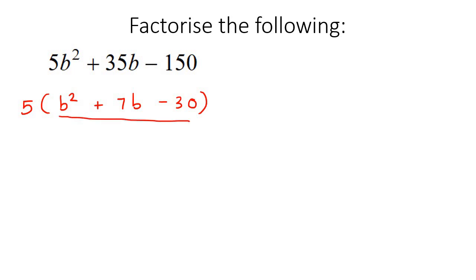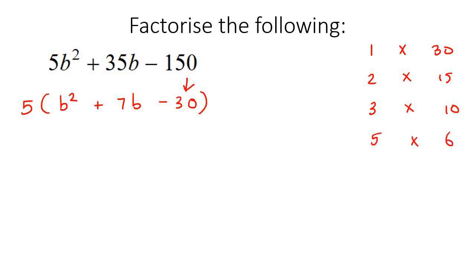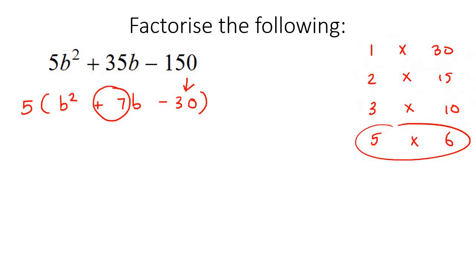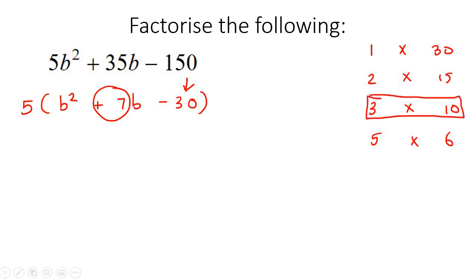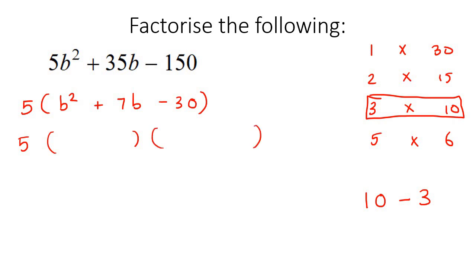Now we have a trinomial. We look at the number 30 and think about all the different ways you could write that: 1×30, 2×15, 3×10, 5×6. Now we quickly scan through these to find the pair that helps us make 7. It's going to be 3 and 10, because 10 take away 3 gives you 7. So you make two brackets and say b and b, then plus 10 and minus 3, because 10 take away 3 is 7.